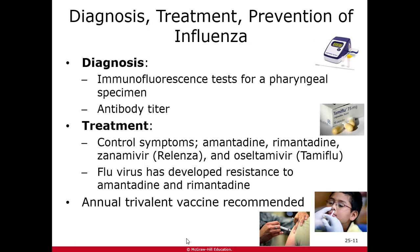The best prevention is an annual flu vaccine. The more people vaccinated, the less opportunity the flu has to develop new strains through antigenic drift. Even if you do get the flu after vaccination, you'll have less severe signs and symptoms. Getting the flu vaccine every winter is highly recommended.